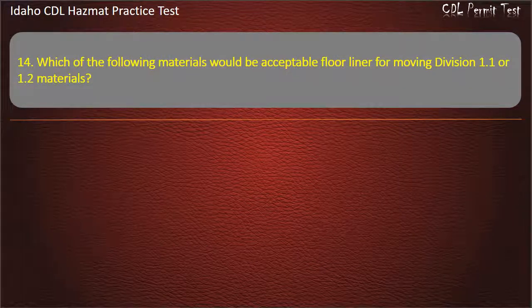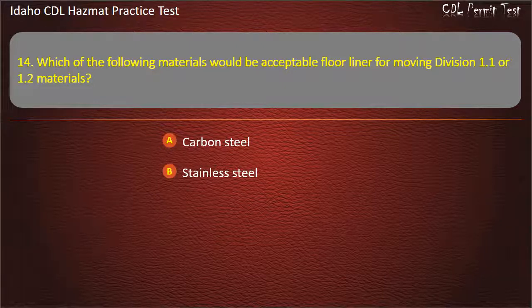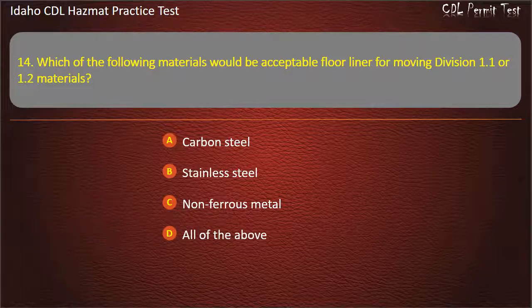Question 14. Which of the following materials would be acceptable floor liner for moving Division 1.1 or 1.2 materials? Carbon steel. Stainless steel. Non-ferrous metal. All of the above. Answer: Non-ferrous metal.